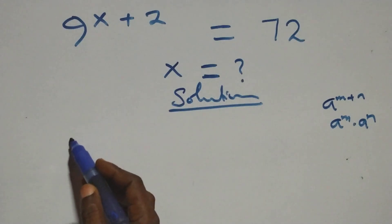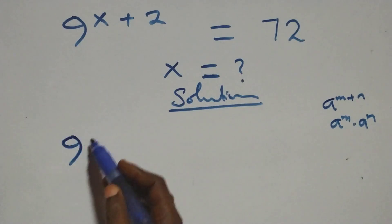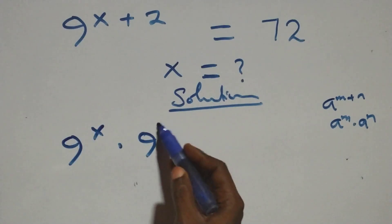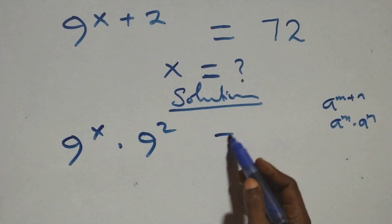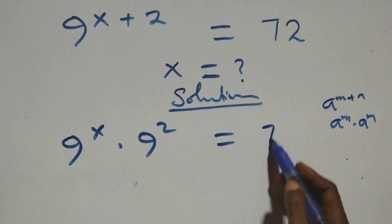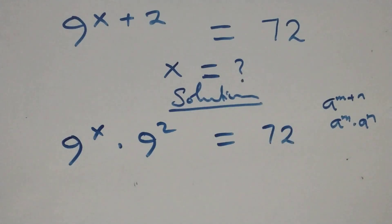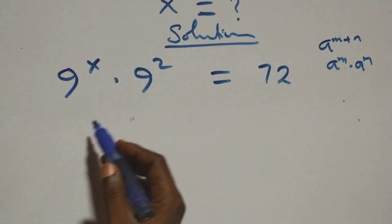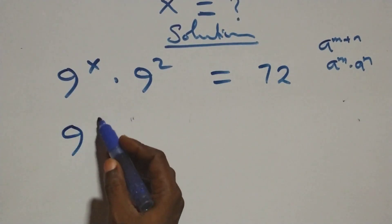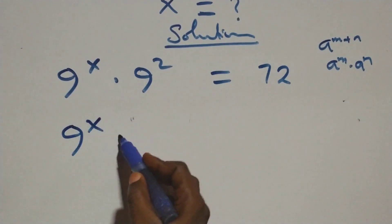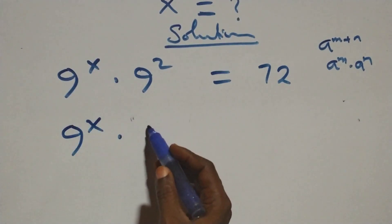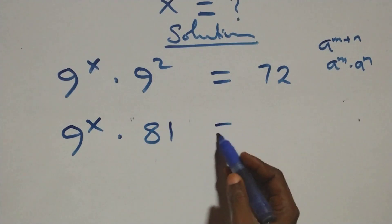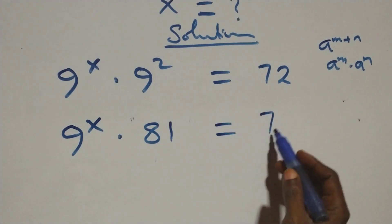We have 9 raised to power x times 9 squared equals 72 on this side. This is the same as 9 raised to power x times 9 squared — 9 times 9 — that's 81, equals 72.